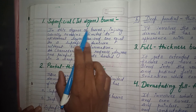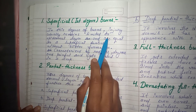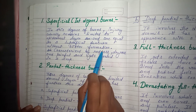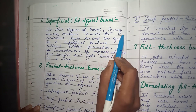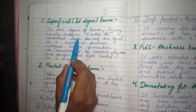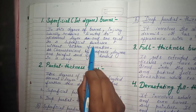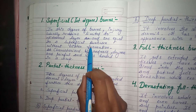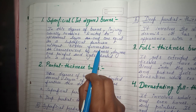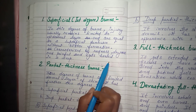The first degree is superficial burn. In this degree, injury usually remains limited to the epidermal layer and is equal to a superficial sunburn without blister formation. It means only the superficial layer of skin is affected, presenting with redness. It is characterized by redness, dryness, and pain, and it gets healed within a week.